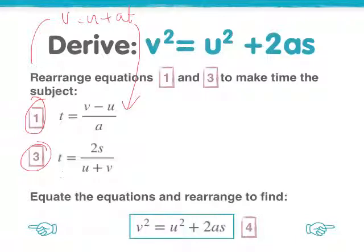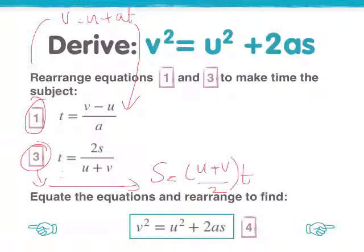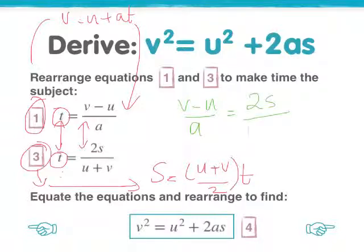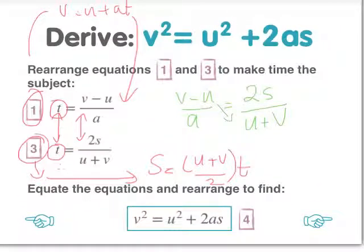Hang on a minute, what did it look like before? It looked like this. So you equate it to make t the subject of the equation. And what you end up with is the same subject, which means that these two are also equal. So if we expand that, v minus u over a equals 2s over u plus v. What we now need to do is to expand or multiply out these brackets here. So if we rearrange that, we get 2sa, multiplying these two, equals v minus u times u plus v.